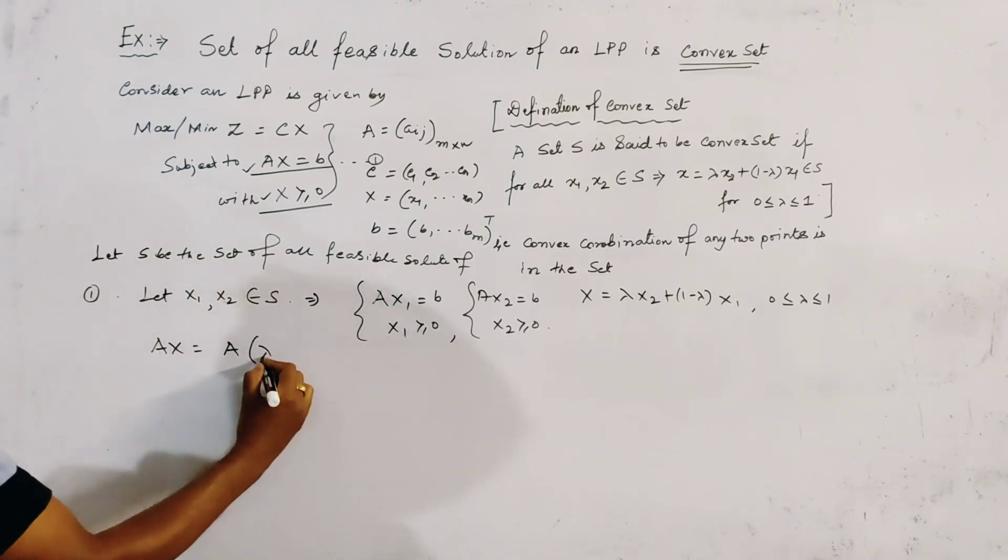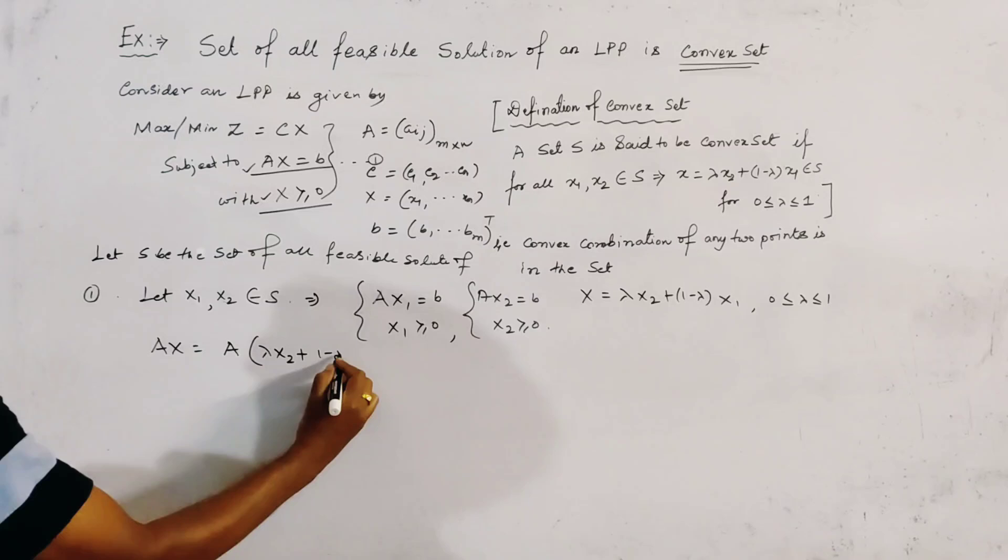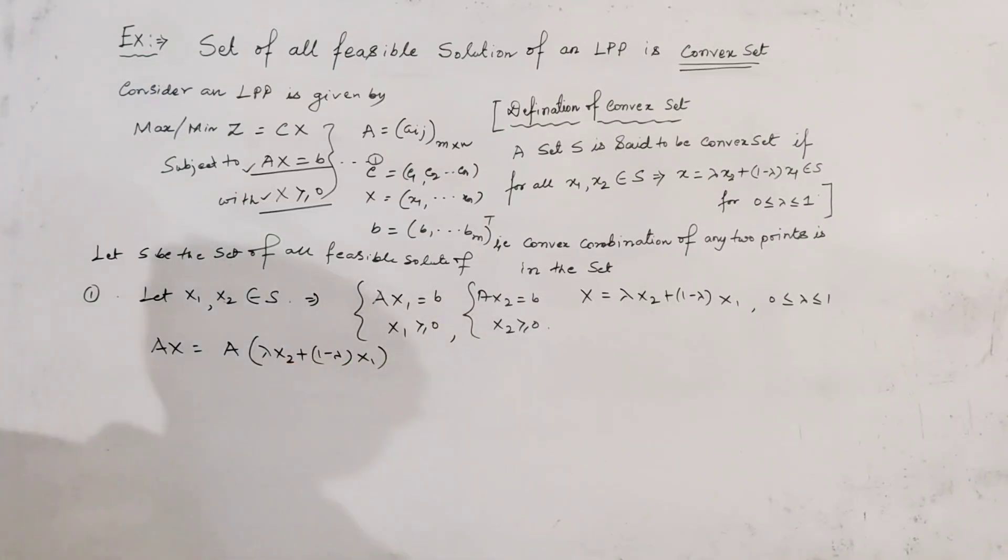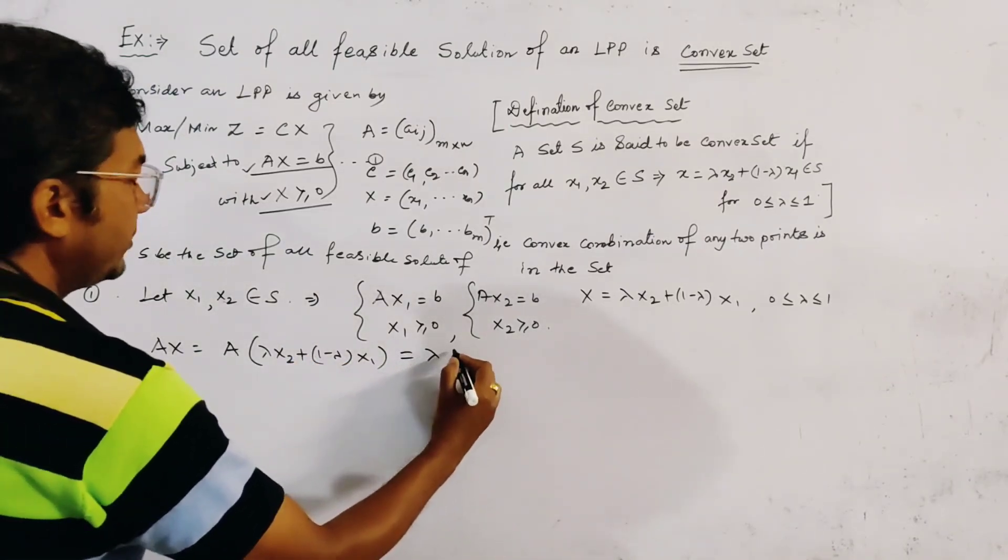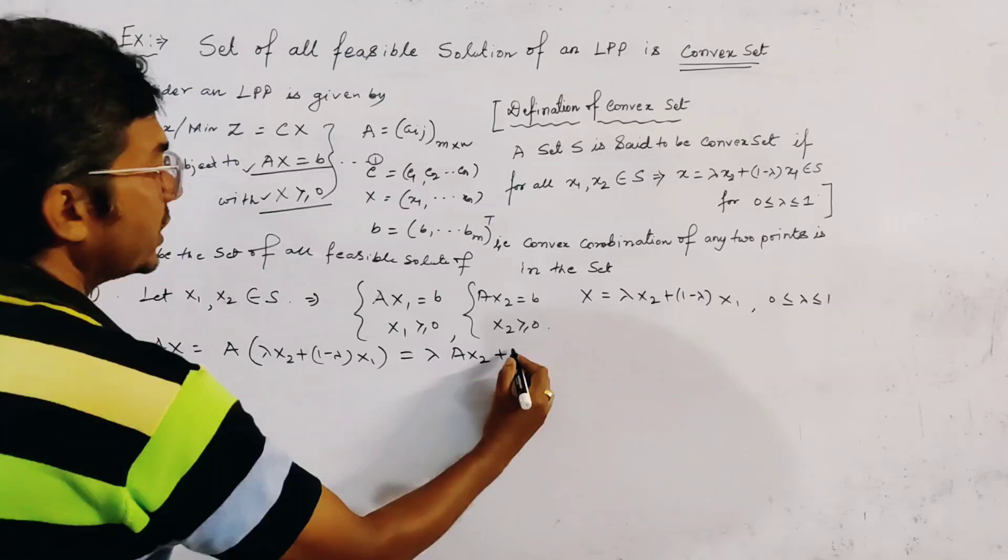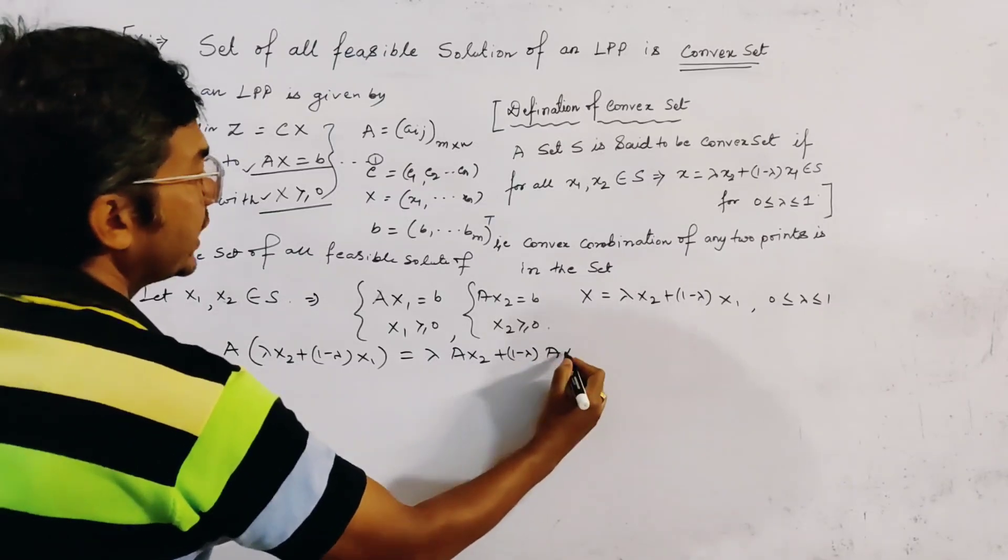equal to lambda, X2, plus 1 minus lambda, equal to X1. And this is given by lambda, equal to A, X2, plus 1 minus lambda, equal to A, X1.